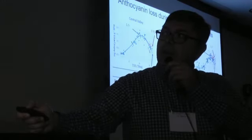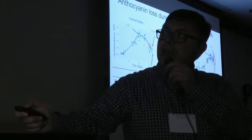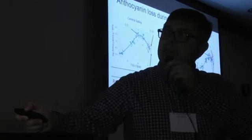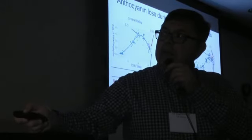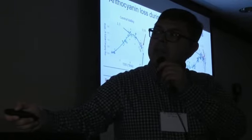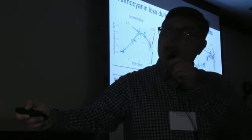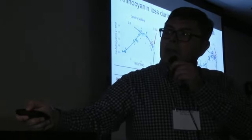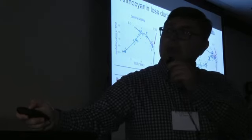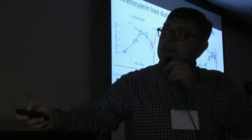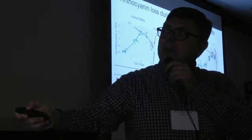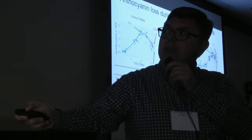We do see anthocyanin loss during hang time at three locations in California—Central Valley, Napa, and Sonoma. The x-axis is total soluble solids in all plots; the y-axis is milligrams of anthocyanins per gram of fresh mass. There's a relationship between total soluble solids accumulation and anthocyanin biosynthesis content and concentration. In this exercise over three years, we plotted the raw accumulation of anthocyanin biosynthesis against total soluble solids.